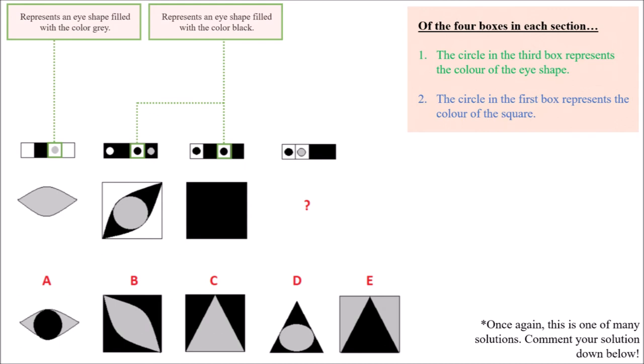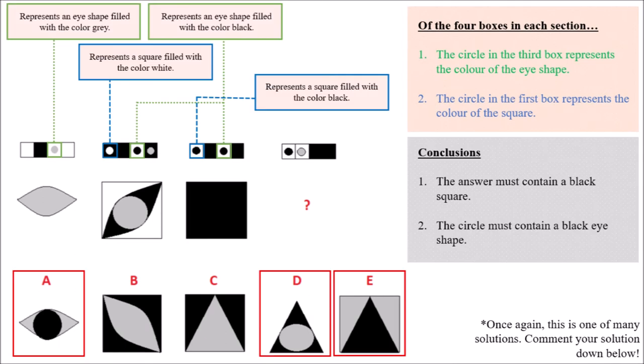Using this logic that we've just discovered, we can analyze the second and third items. The second item contains a white square which corresponds to the white circle in the first position of the second bar. On the other hand, the third item contains a black square which is associated with the black circle in the first position. Since the first slot of the fourth bar contains a black circle, directly below it should be a figure which contains a black square.